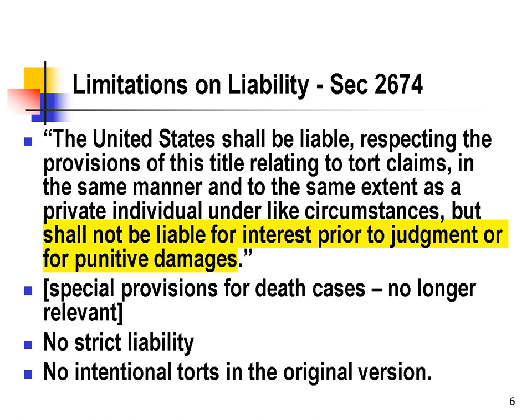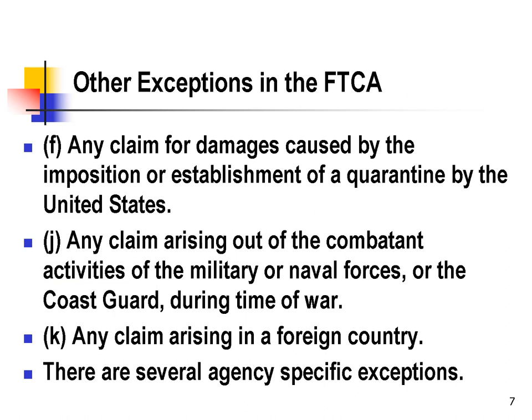There's no strict liability or products liability claims under the Federal Tort Claims Act, nor is there any special treatment of claims for ultra-hazardous activities. The original version of the Act did not allow recovery for intentional torts. There are numerous other specific exemptions in the Act — for example, claims for damages caused by imposition or establishment of a quarantine, and claims arising out of the combat activities of the military, naval forces, or the Coast Guard during times of war.